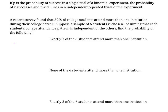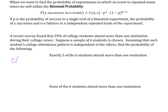So I want to find, looking back at our formula, the combination of six choose three, times the probability — the percentage is 59%, so 0.59 to the power of three, because that is our x value, times one minus 0.59 to the power of six minus three.